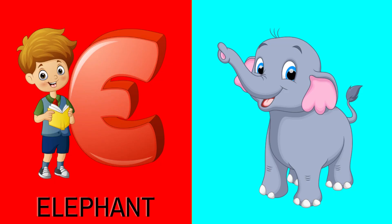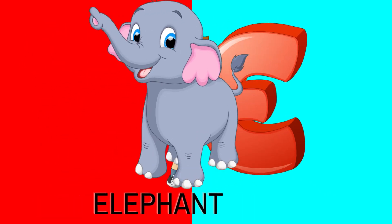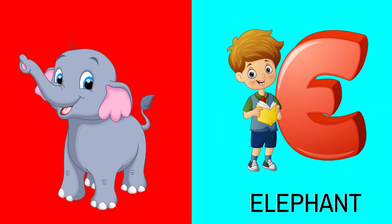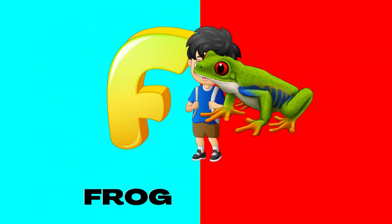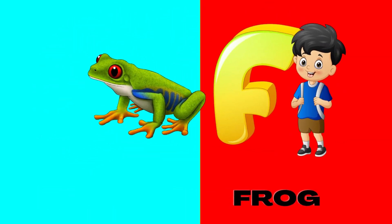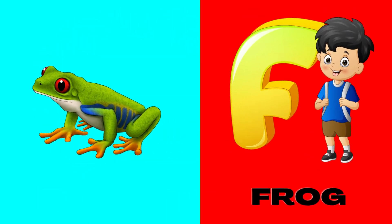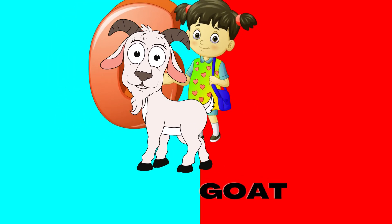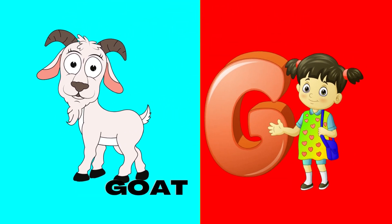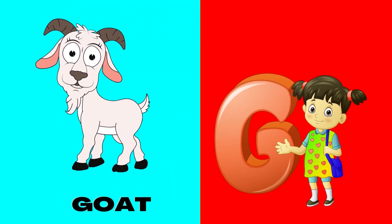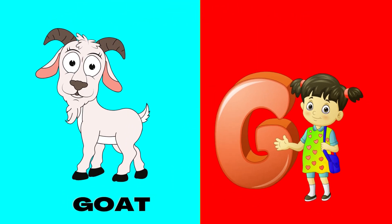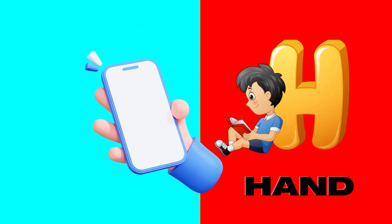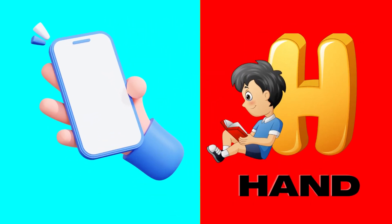E is for elephant, e-e-elephant. F is for frog, f-f-frog. G is for goat, g-g-goat. H is for hand, h-h-hand.